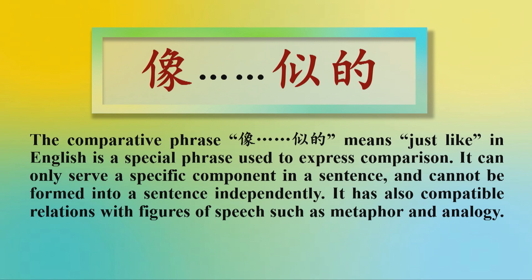像是的。The comparative phrase 像是的 means, just like in English, is a special phrase used to express comparison. It can only serve a specific component in a sentence and cannot be formed into a sentence independently. It has also compatible relations with figures of speech such as metaphor and analogy.